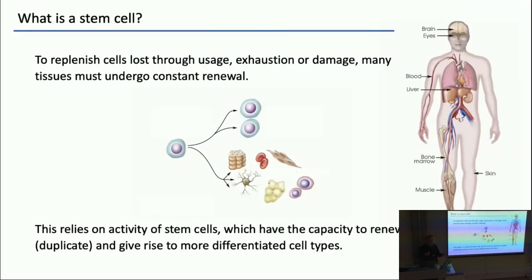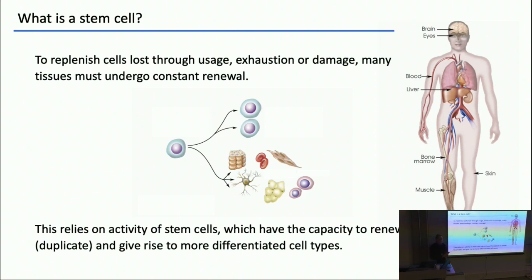What is a stem cell? Well, in the context of adult tissue types, to replenish cells which are lost through wear, through exhaustion, through damage, many tissues undergo constant turnover through adult life. You can think about epithelial barrier function — epithelial layers like the skin and intestinal epithelium — or the blood system, or parts of the brain that are constantly turned over.